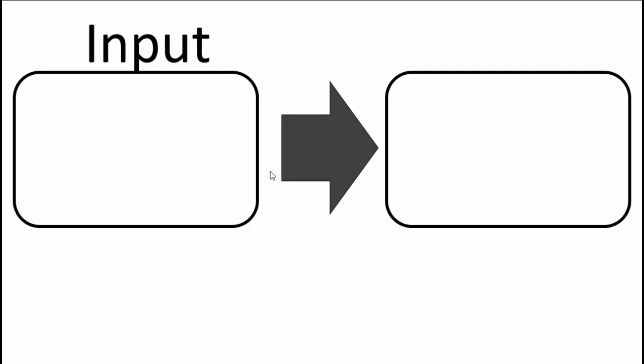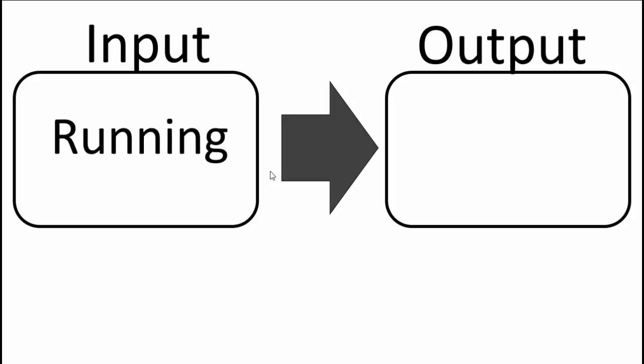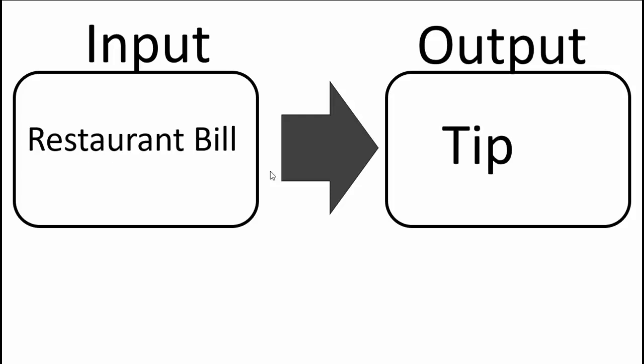So you have an input and an output. We had sales produced an output of profit. We had running allowed you to increase your heart rate. We had restaurant bill dictated how much tip you would spend. So you can see that in all of these examples, you had an input and an output. So that's a natural definition of a function.